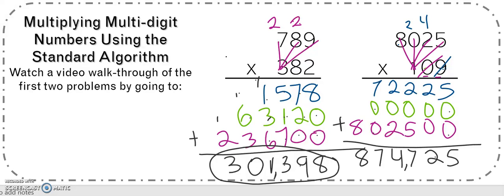Now I can do my comma trick. 1, 2, 3, comma. 1, 2, 3. Oh, there's nothing more. So my answer is 874,725. Good luck.